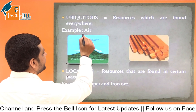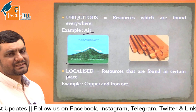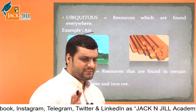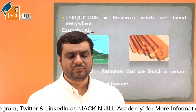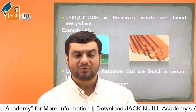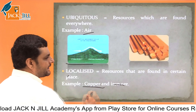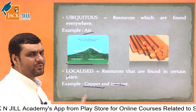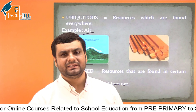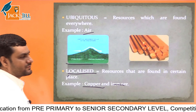To summarize the examples: air is the most simple example of ubiquitous resources — it is found in all places. Copper, iron, and gold are found only in certain places through mines, not everywhere. So copper, iron, and gold are examples of localized resources.